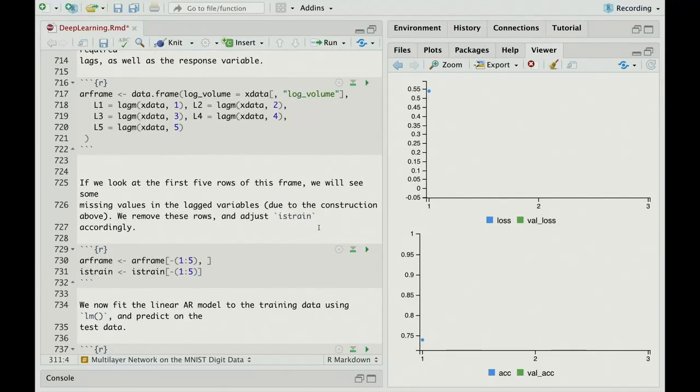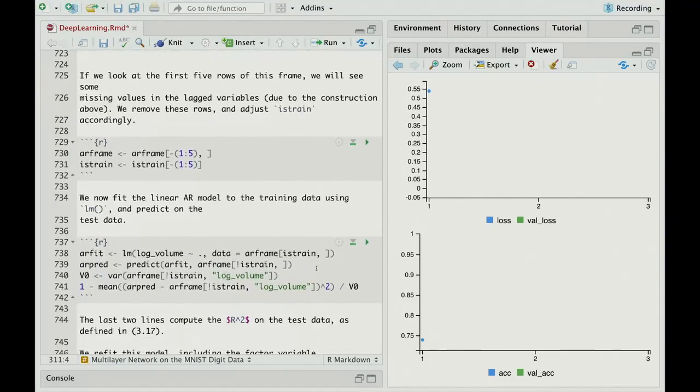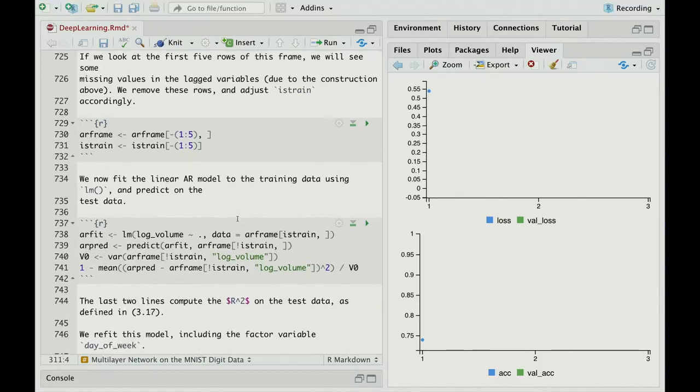If we look at the first five rows, we'll see we have some missing data, because at the beginning of the series, we can't make lags going backwards, so we're going to remove those, and there'll be five of them that we need to remove. And so that's what we do there.